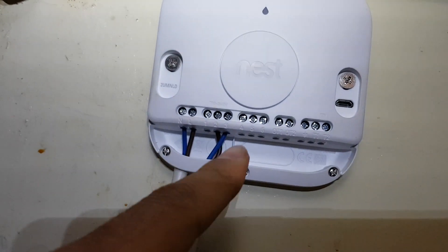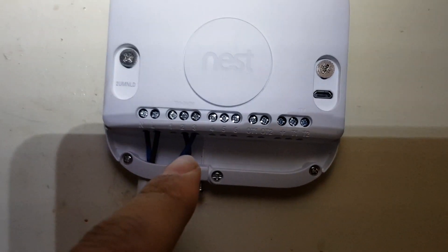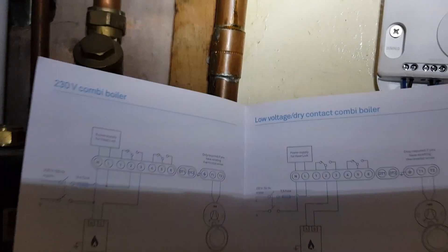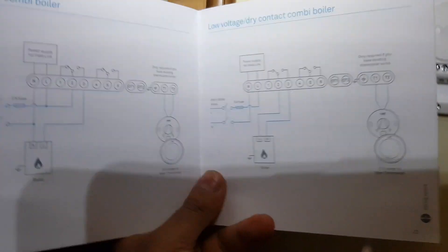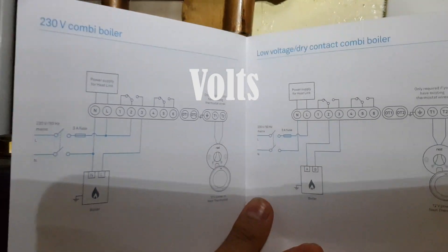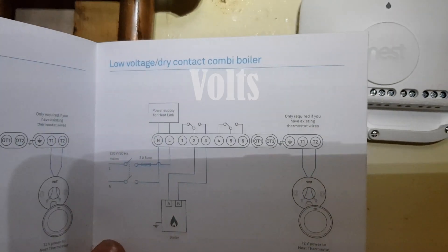If you see here, this is the cable. These two connected at two and three are the ones which are connected to my boiler. There are two diagrams here in the instruction manual: one is 230 volt combi boiler and one is low voltage dry contact combi boiler.